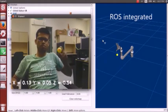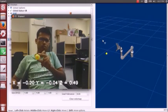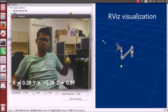This video shows how the ball is tracked in 3D and visualized in RViz, the ROS visualization tool.